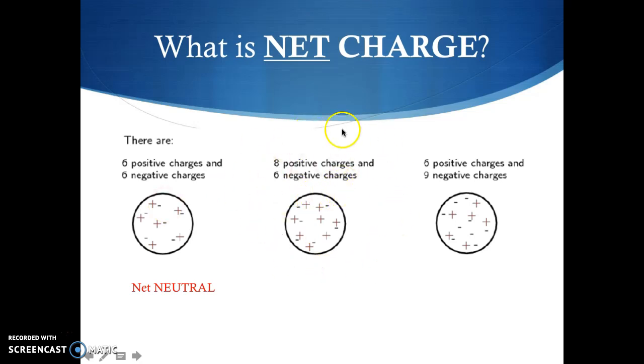The middle sphere, however, has eight positive charges and six negative charges. You'll see here that there are more positives than negative, so we would call this a net positive charge. And finally, our last sphere on the far right, we have six positive charges and nine negative charges. The negatives are winning out. We would call this a net negative charge.